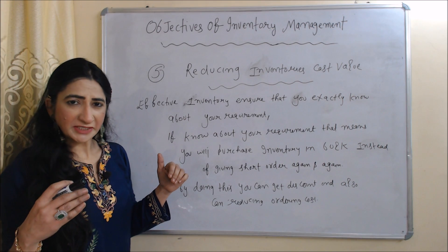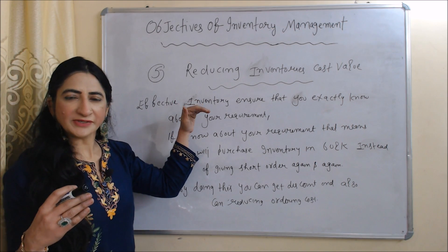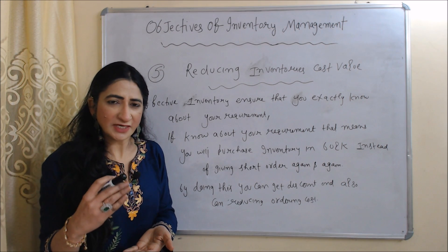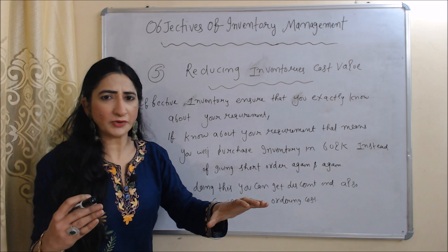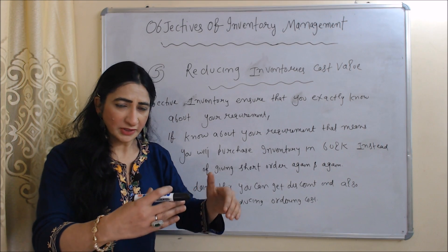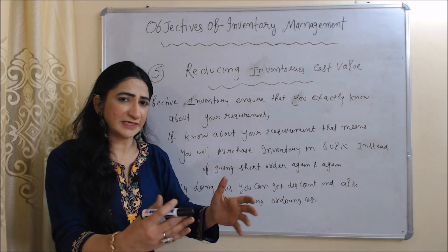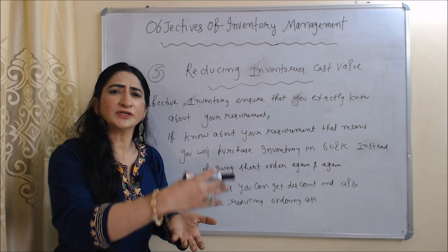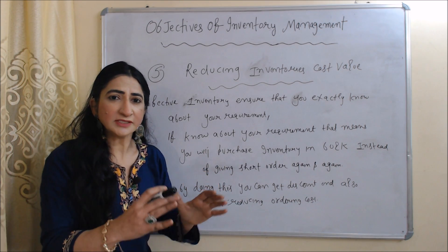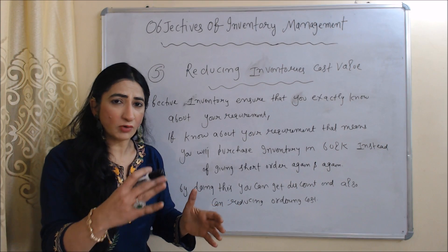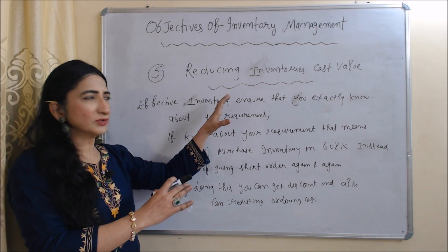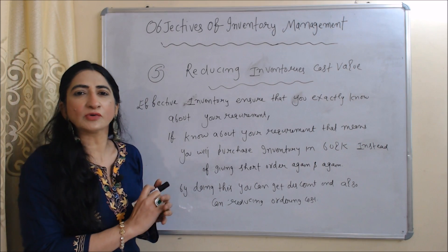The next objective is reducing inventory's cost value. Effective inventory management ensures that you exactly know about your requirement. If you exactly know your requirement, you will purchase in bulk instead of giving short orders again and again. By doing this, you will get some discount and can also reduce your ordering cost, which reduces overall inventory cost value.